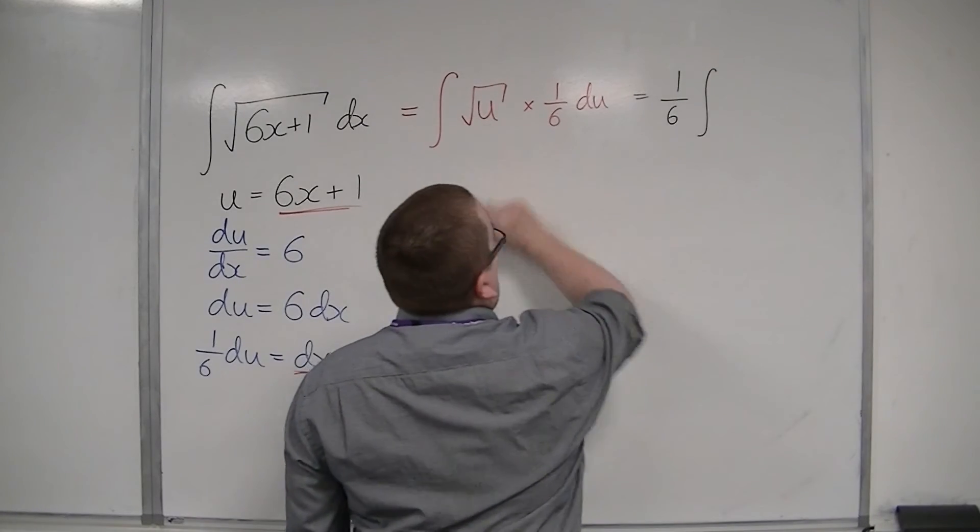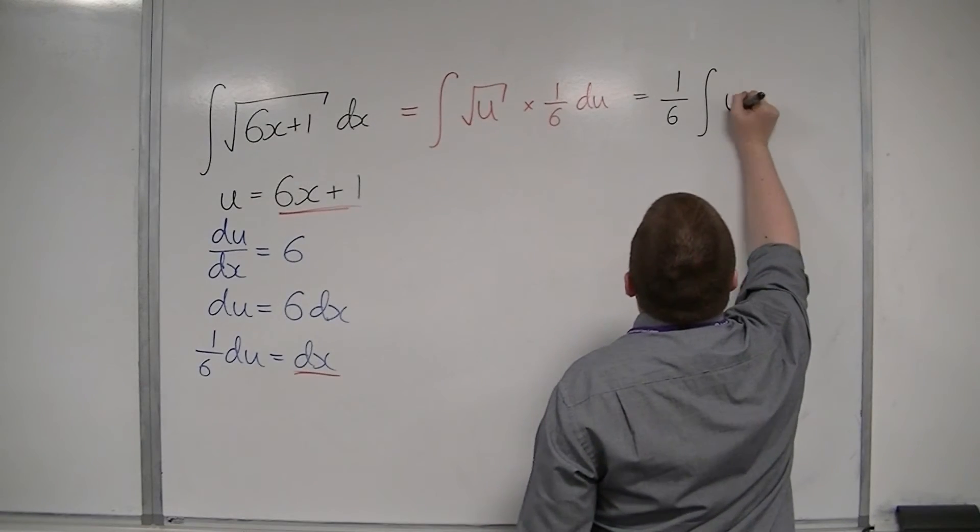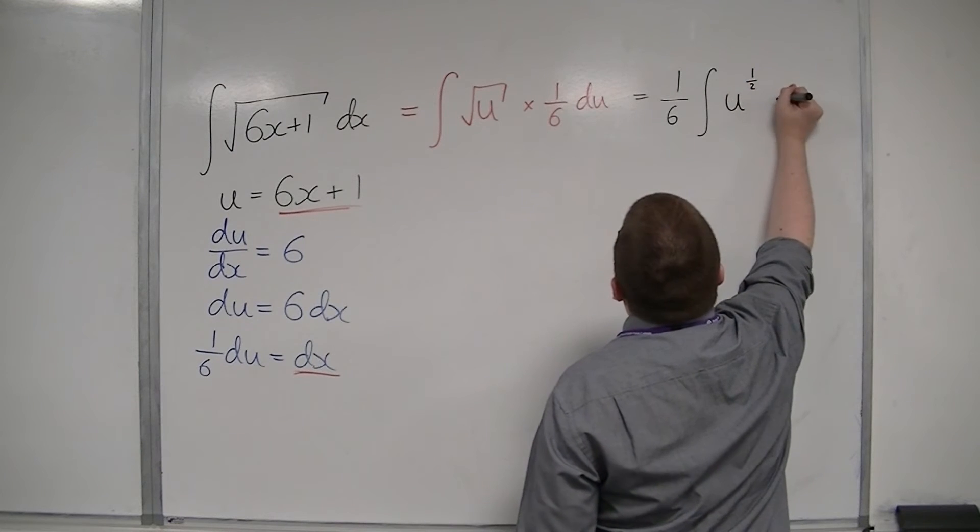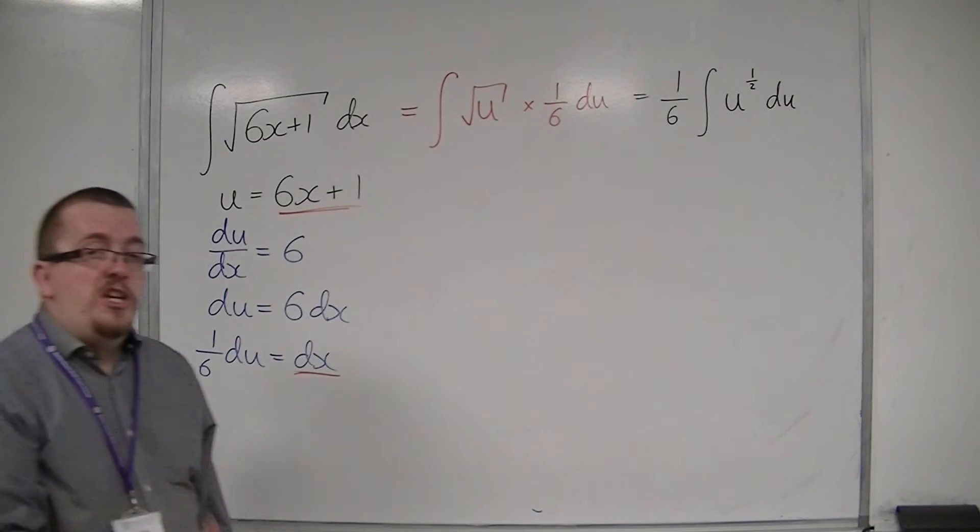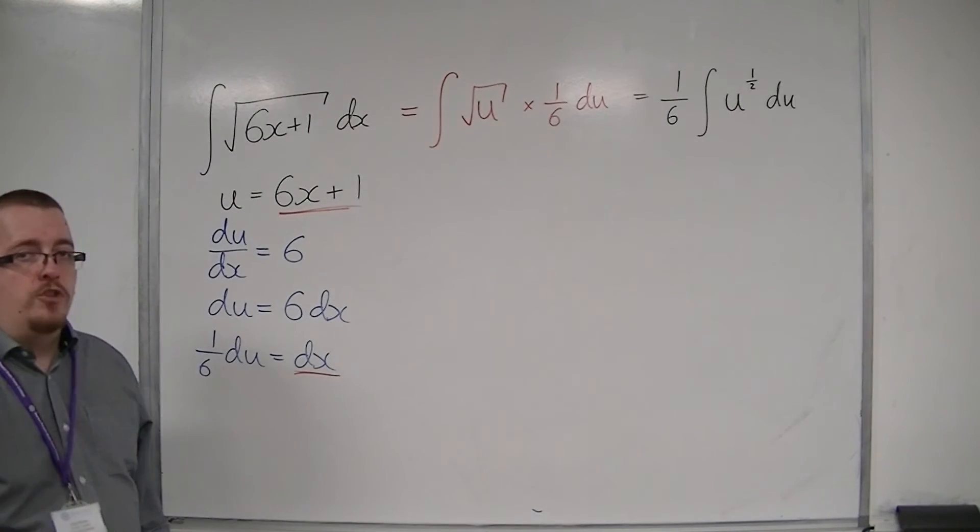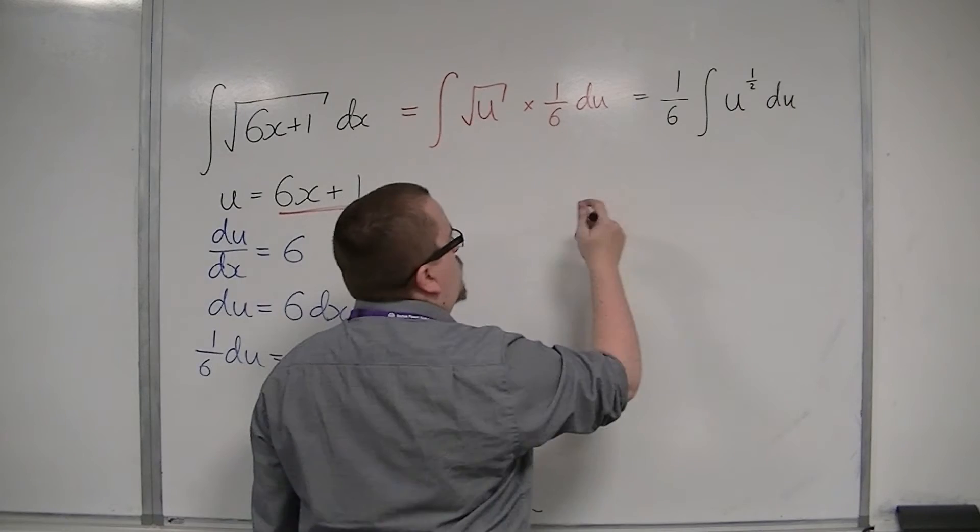And then, I've got this root u. So, I'm going to write that as u to the power of a half. This has reduced this problem to a core 2 integral. So, I'm now ready to integrate.